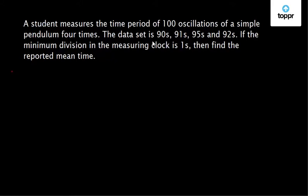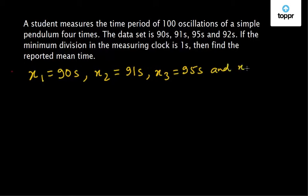First of all, let us calculate the mean of these sample data. So the sample data can be written as x1 equal to 90 seconds, x2 equal to 91 seconds, x3 equal to 95 seconds and x4 equal to 92 seconds.